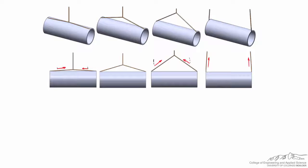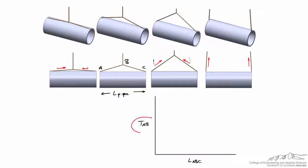For notation, let's call the left attachment point A, the knot point B, and the right attachment point C. We'll call the length of the pipe L_pipe. And we'll want to make a graph of the tension in rope AB as a function of the total length of rope ABC.